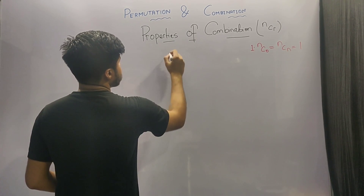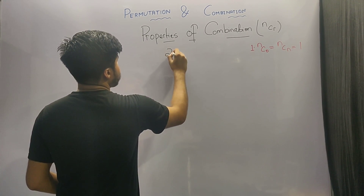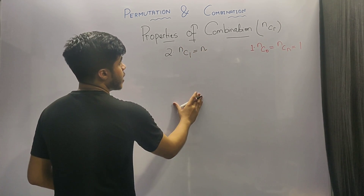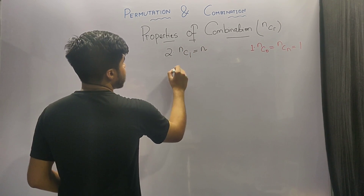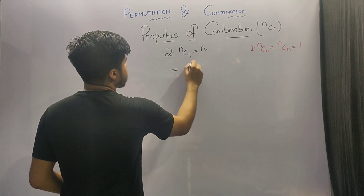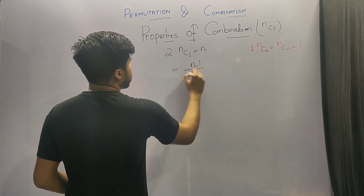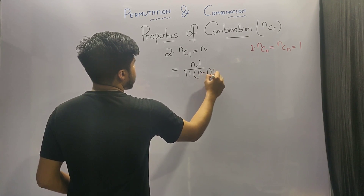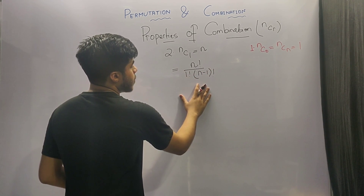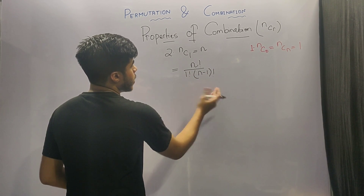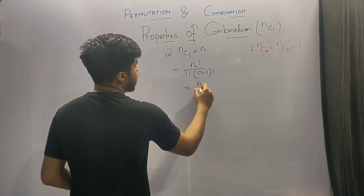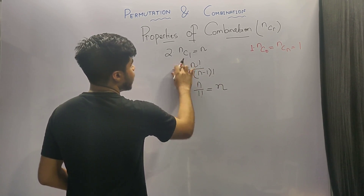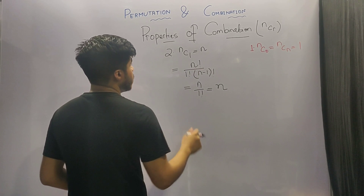The second property says that nC1 is equal to n. We can say that nC1 is equal to n factorial upon 1 factorial into n minus 1 factorial. n factorial upon n minus 1 factorial is equal to n, and n divided by 1 factorial is equal to n. So nC1 is equal to n.